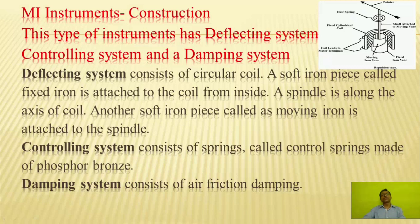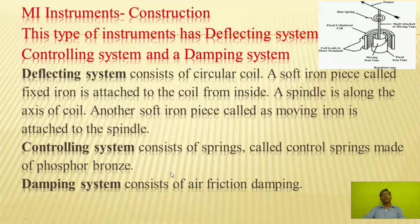We will now see the construction of MI type instruments. This type of instrument has a deflecting system, controlling system, and damping system. The deflecting system consists of a circular coil. A soft iron piece called the fixed iron is attached to the coil from inside. A spindle is along the axis of the coil. Another soft iron piece called the moving iron is attached to the spindle. The controlling system also consists of control springs made of phosphor bronze. In MI type instruments, air friction damping is used, whereas in PMMC type, eddy current damping is used.